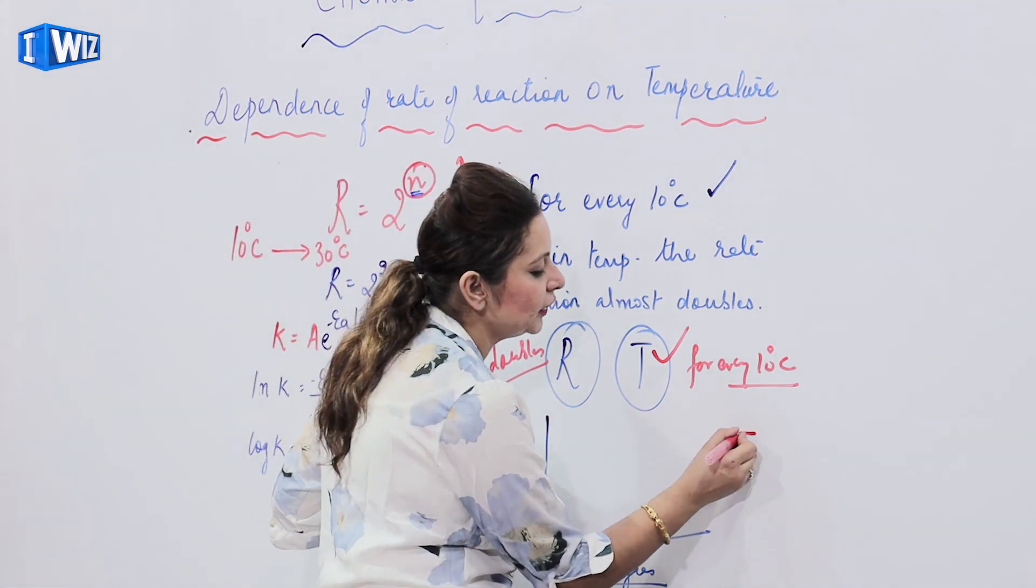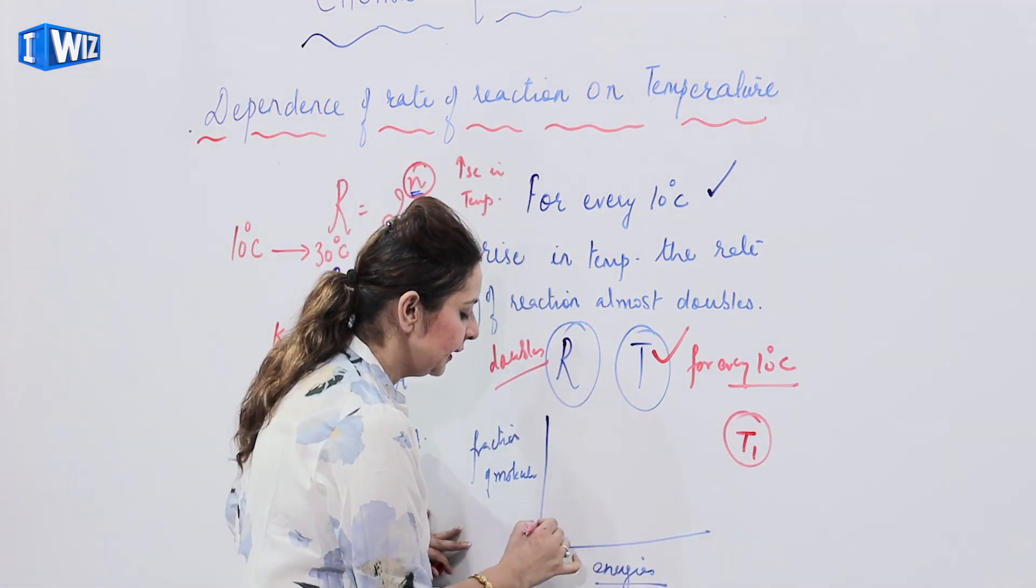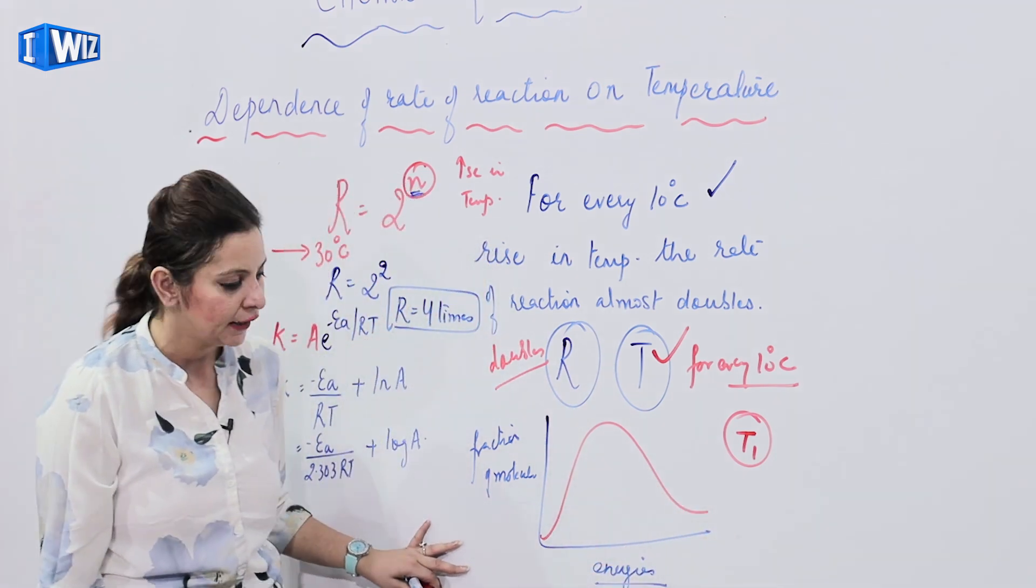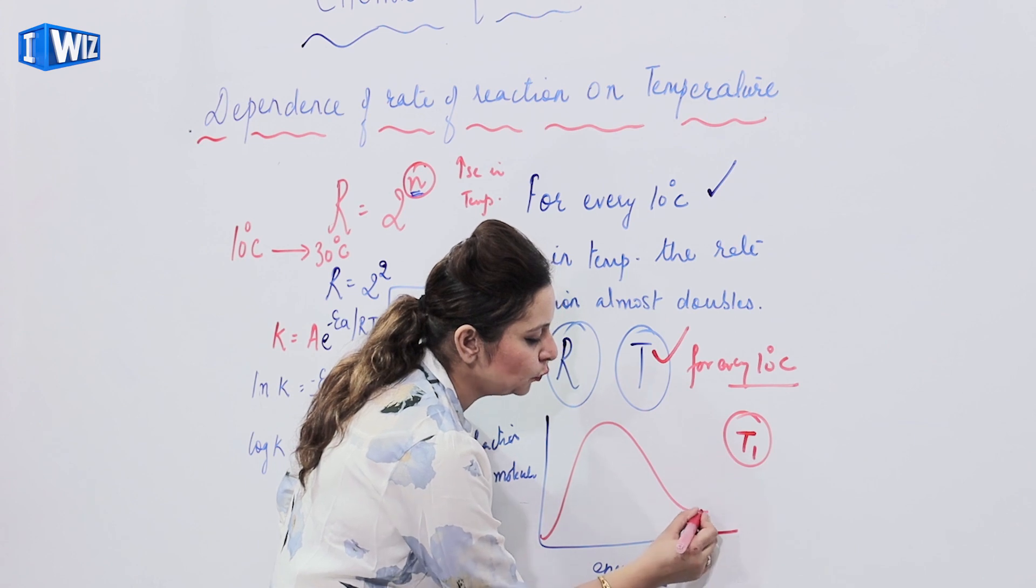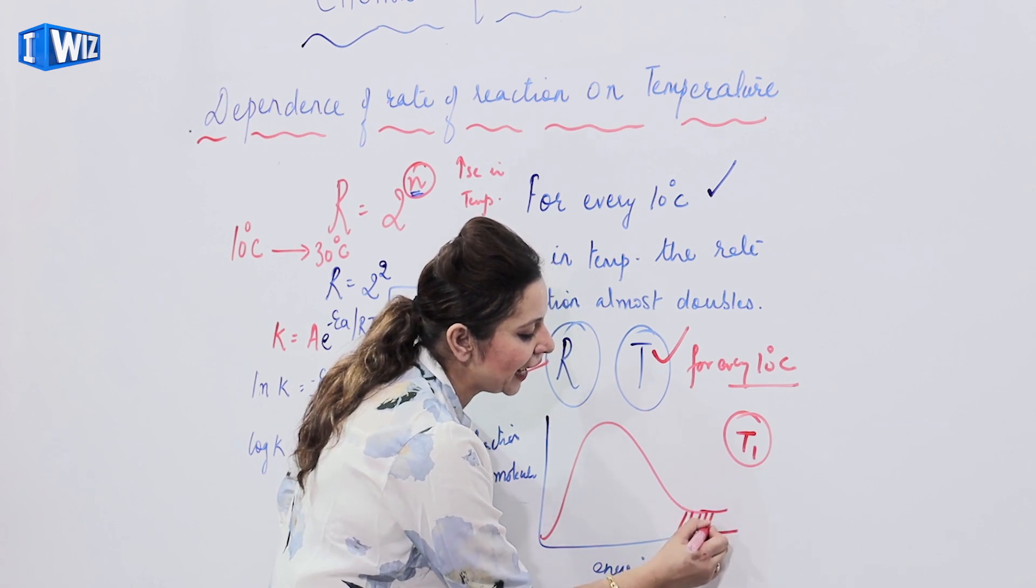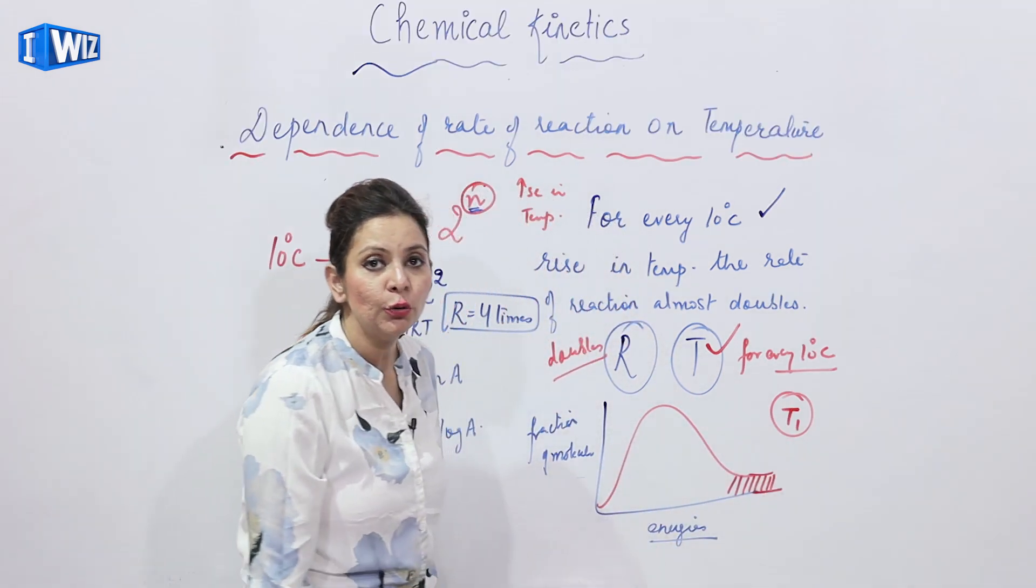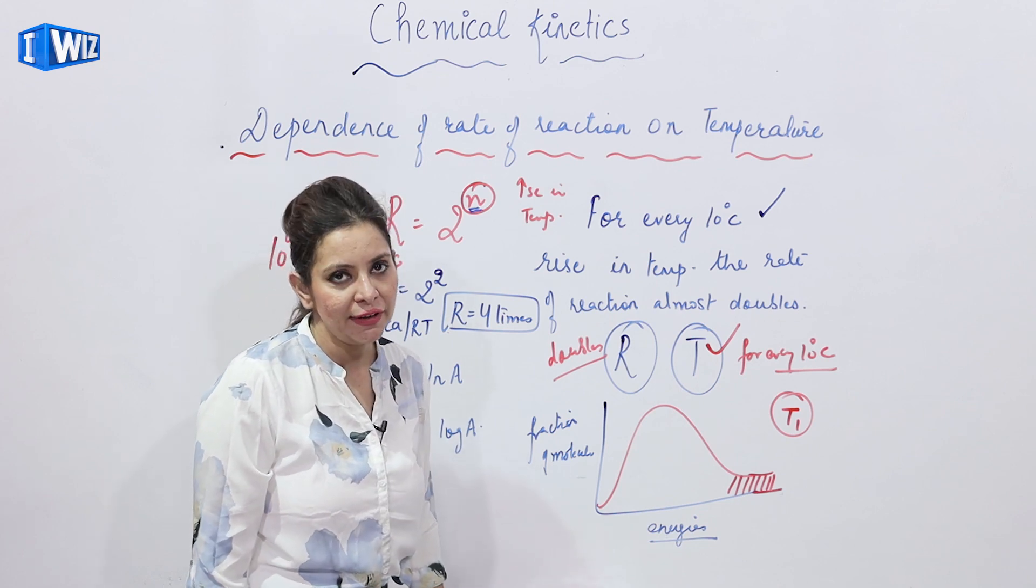If we take into account, let's say at temperature T1, the graph obtained is like this. That means this much molecules possess that much energy and proper orientation which can cause the effective collision.